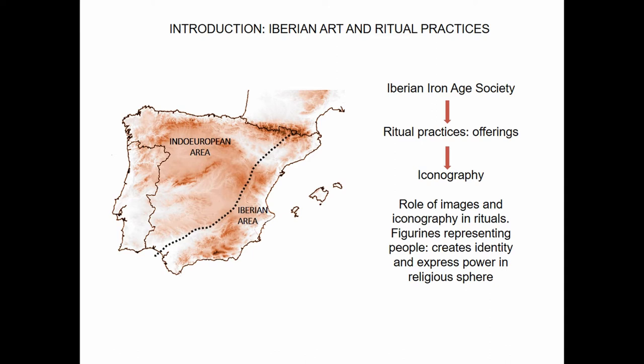The Iberians. We use the word Iberia for the Iberian Peninsula, but in archaeological and historical studies we talk about Iberian culture or the Iberian Iron Age to refer to local groups placed in the Mediterranean part of the Iberian Peninsula. The historiographical tradition divides the Iberian Peninsula during the Iron Age into two large areas: the Indo-European Celtic area and the Mediterranean Iberian area.